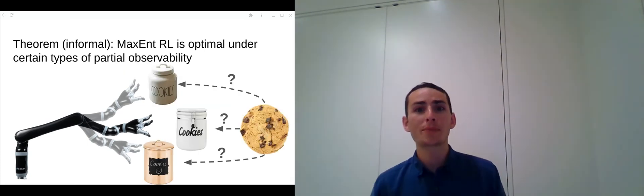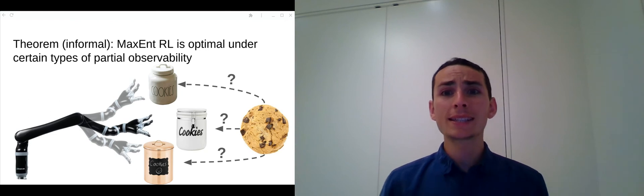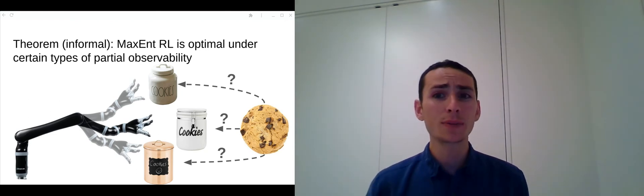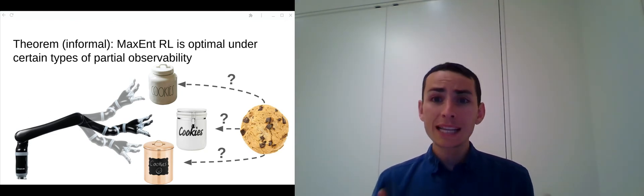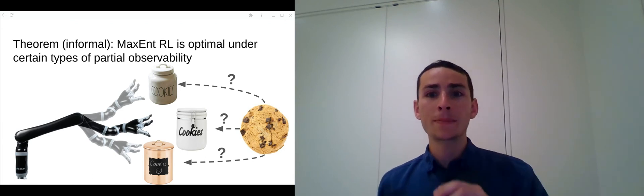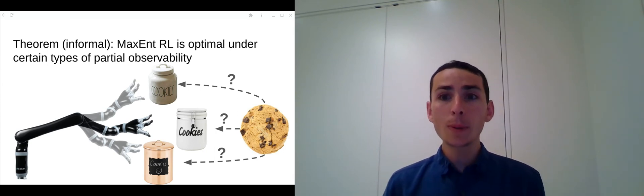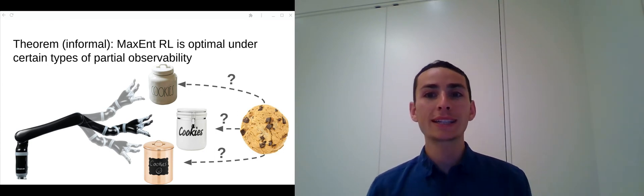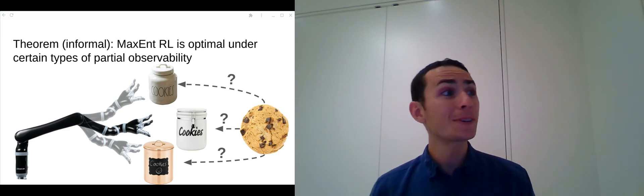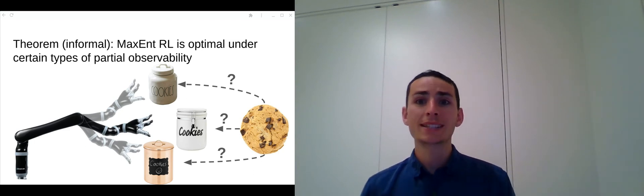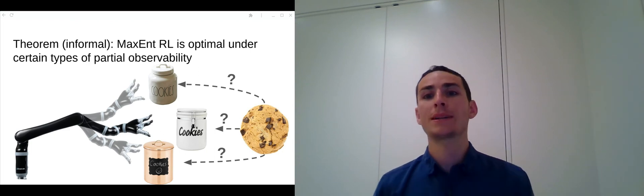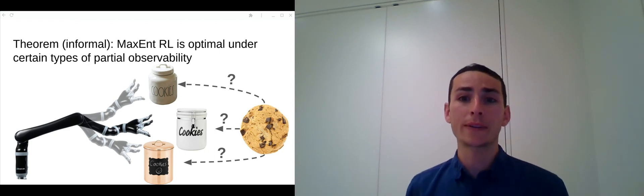And the third setting where MaxEnt RL is optimal is settings where you solve an unknown task. For example, consider a robot that aims to find a cookie as quickly as possible, hidden in one of three jars. If the robot always attempts to look in the exact same jar, it might take infinitely long to find the cookie. In contrast, an agent that includes some randomness guarantees it will eventually find the cookie.